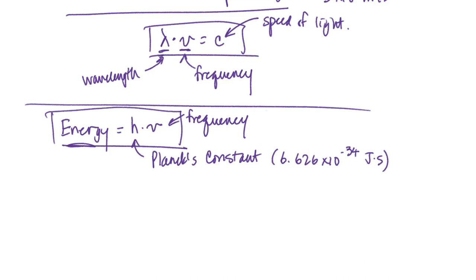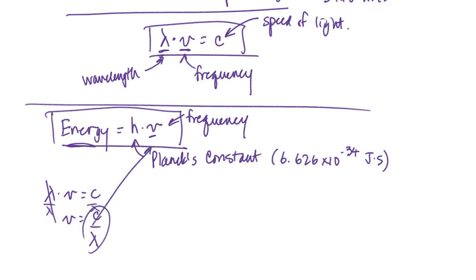If I solve the equation that relates frequency and wavelength to the speed of light for frequency, the frequency is equal to the speed of light divided by the wavelength. If I back-substitute that into my energy equation, I can also say that the energy of the wave is equal to Planck's constant times the speed of light divided by the wavelength of the wave.